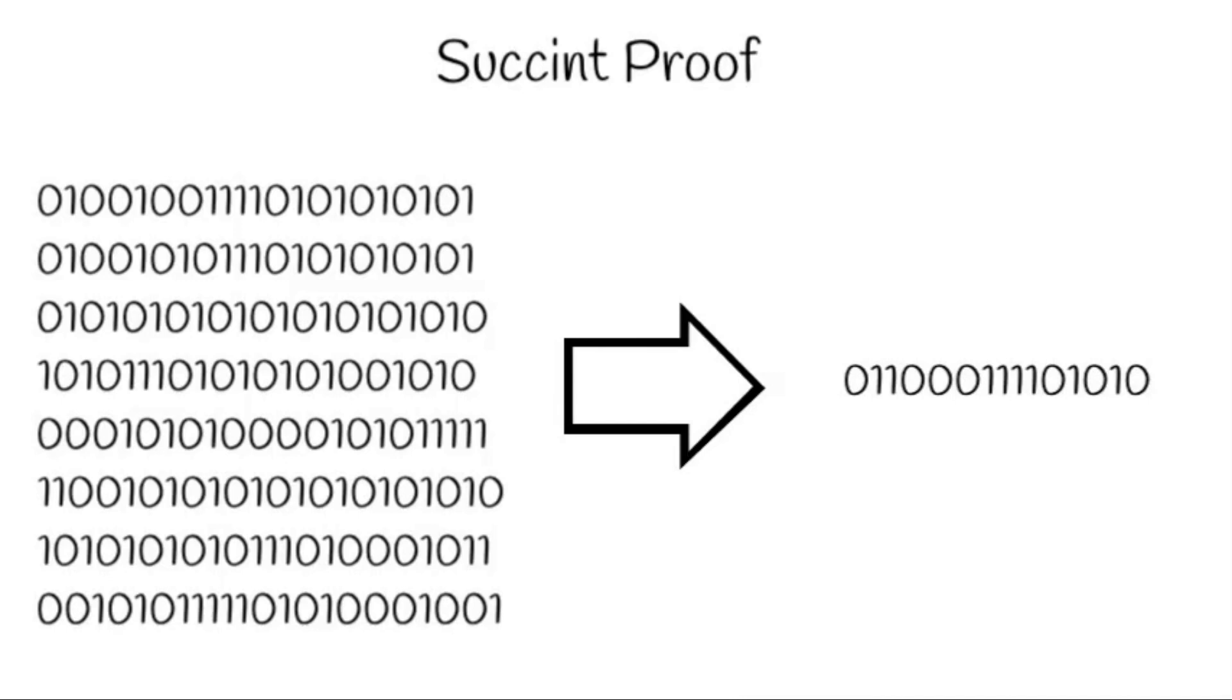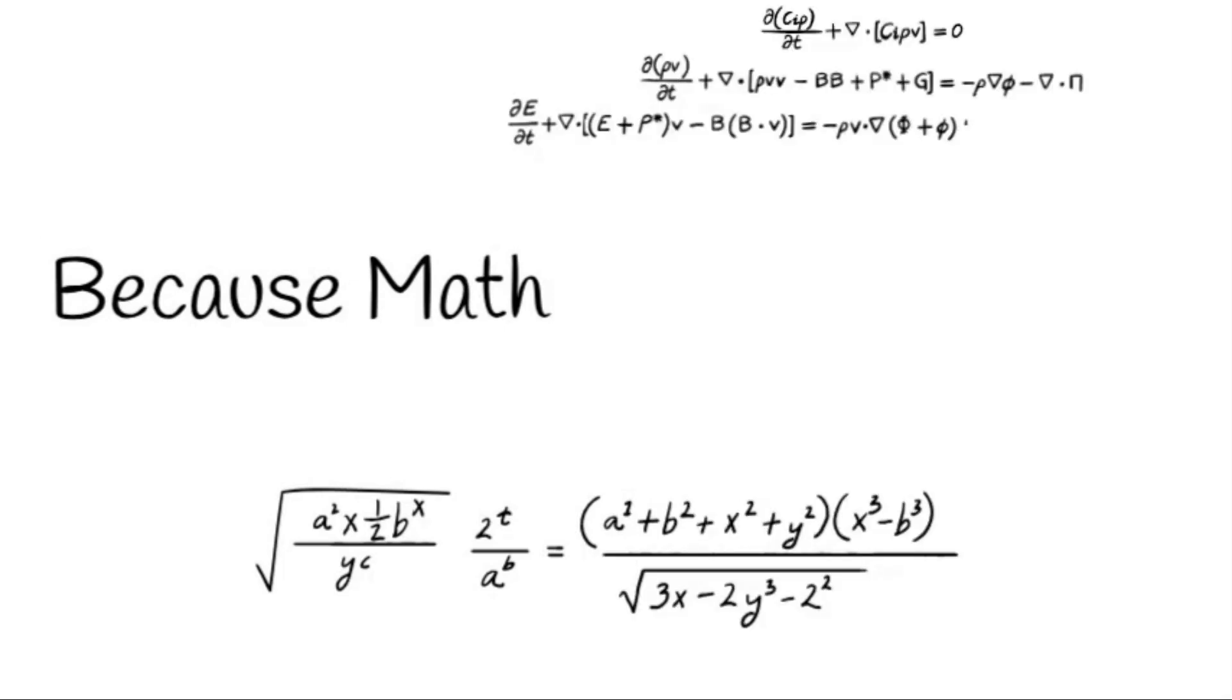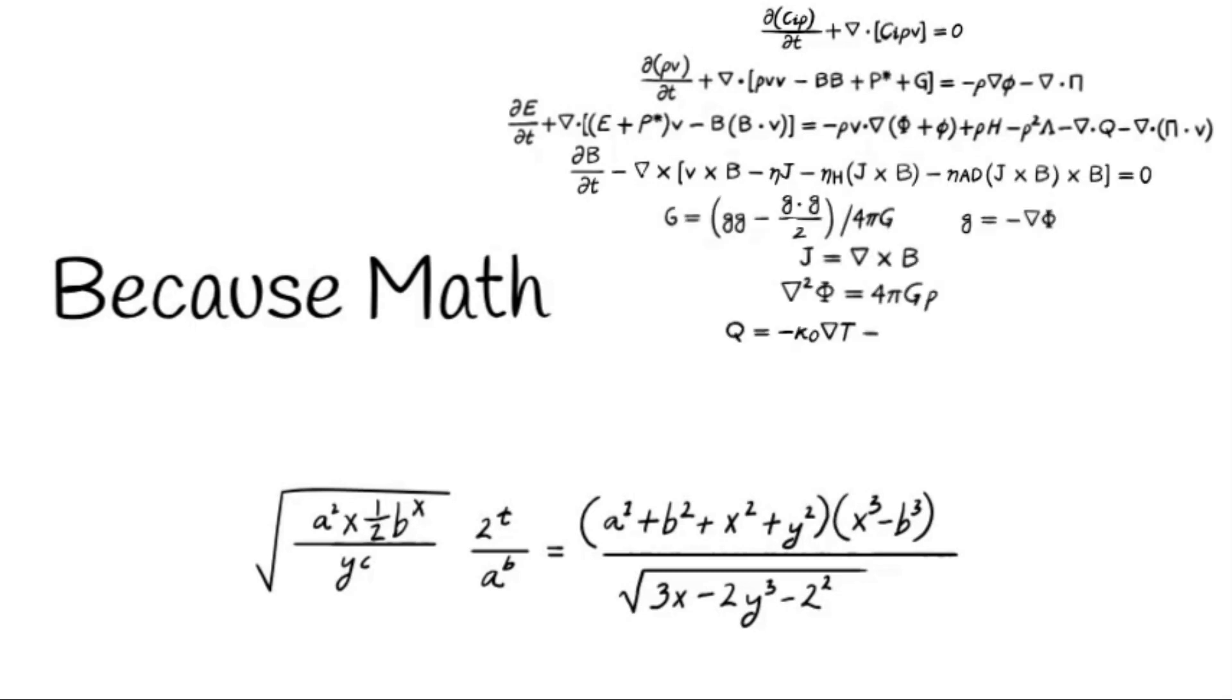Finally, and very importantly, because a ZK proof is a mathematical proof, if you have a valid proof, then you know with certainty that the things the proof relates to took place. In this case, those things are the transactions in the rollup. So the proof validates that the information in the rollup is correct. You don't need to trust any other party or entity, you just need to trust the math. This is very important when it comes to comparing ZK rollups to optimistic rollups.